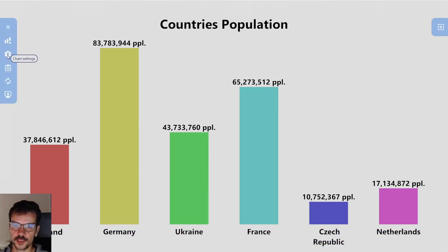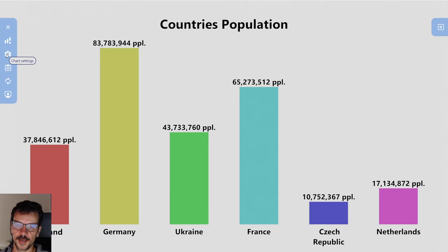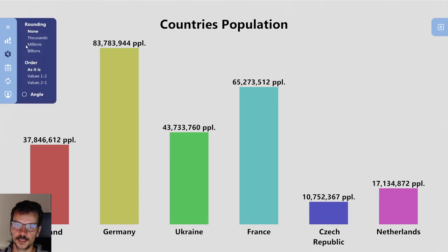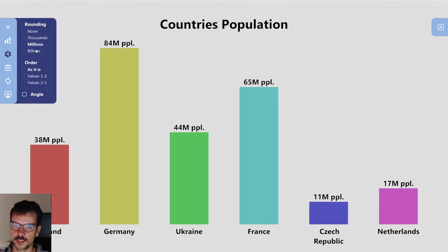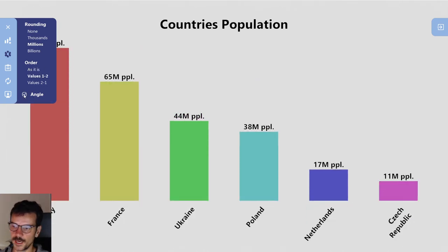Another thing is some updates to the graphics of the icons — that's an aesthetic improvement. You can also export it as PNG. In the settings, you can choose millions, billions, or thousands, and you can change the order and the angle.